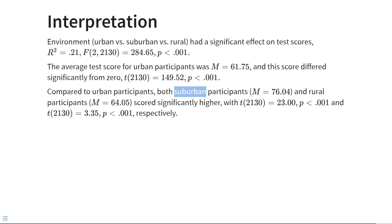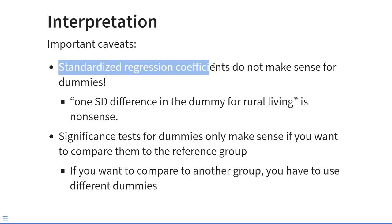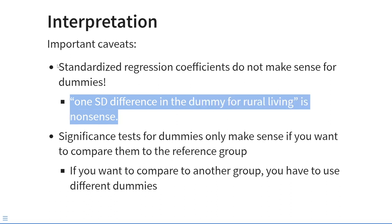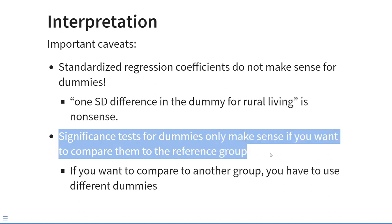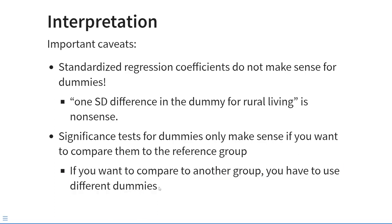A few important caveats: First, standardized regression coefficients do not make sense when modeling dummy variables, because a one standard deviation difference in a dummy variable for rural living is meaningless. Effect sizes like Cohen's d take the place of standardized regression coefficients in t-tests or ANOVA. Second, significance tests for dummy variables only make sense when comparing groups to the reference group. To compare groups to a different group, you must use different dummy variables. That concludes the material on ANOVA — in the tutorial you will practice using both the regression and ANOVA interfaces.